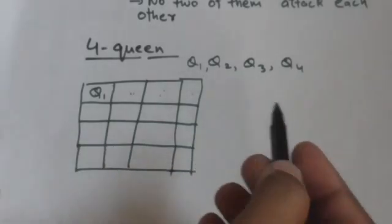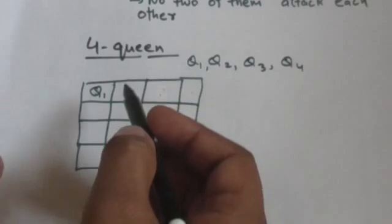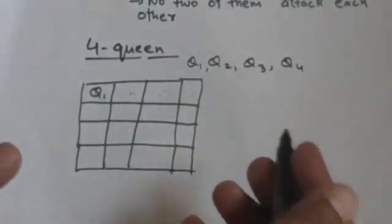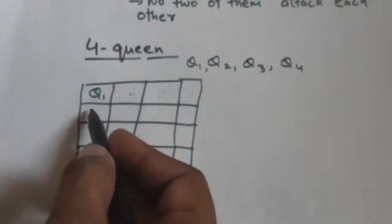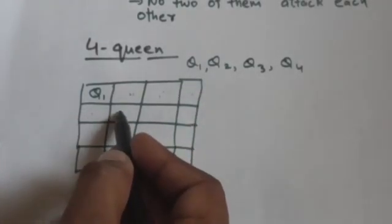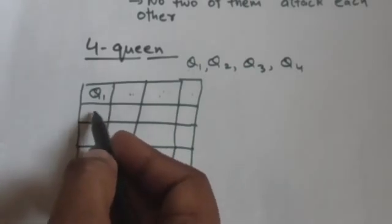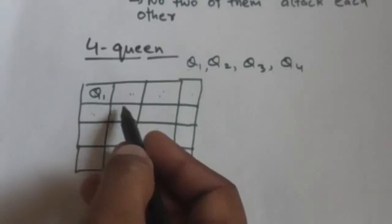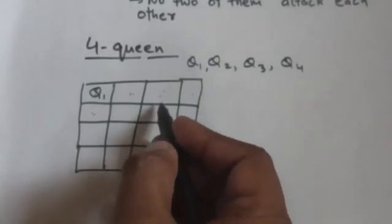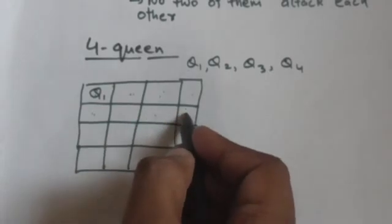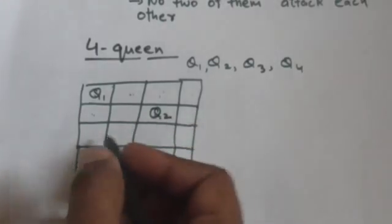We should remember that no two queens should attack each other. We cannot place Q2 in the first or second square of the second row because Q1 would attack it. So we have only two options: either we place Q2 in the third square or the fourth square. Suppose we place Q2 in the third square.